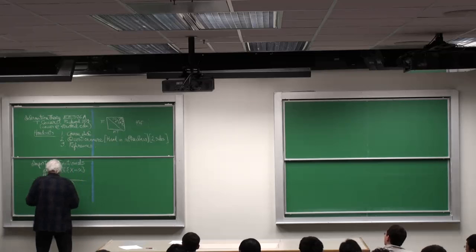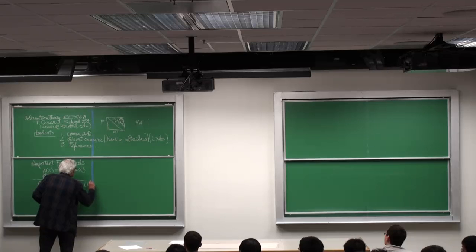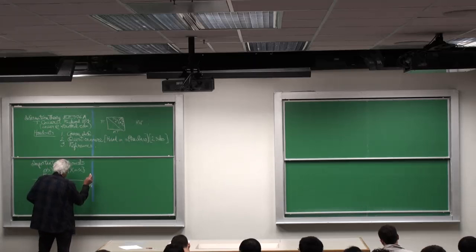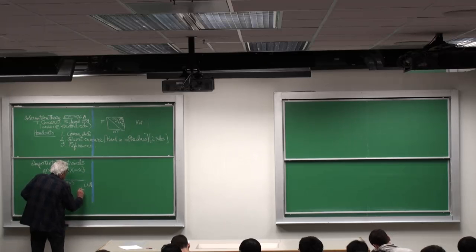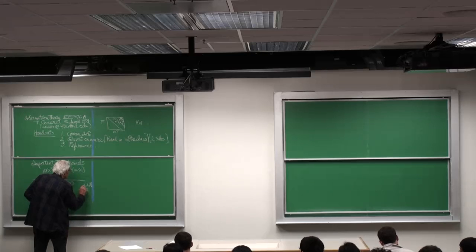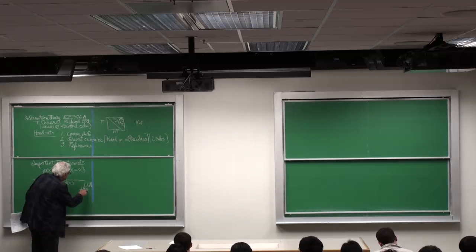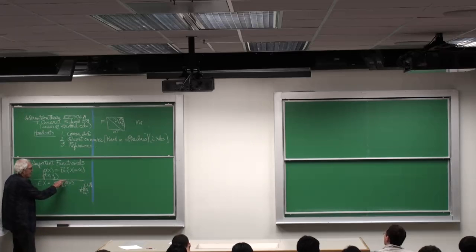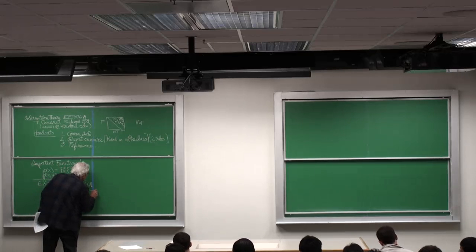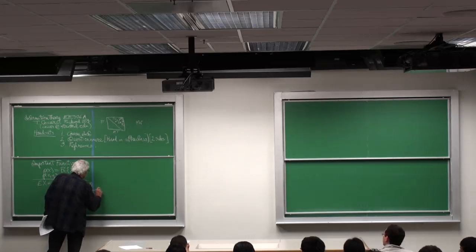LLN - Law of Large Numbers - says that 1 over n summation of xi, i equals 1 to n, where these random variables are independent, identically distributed, and drawn according to p, converges with probability one.